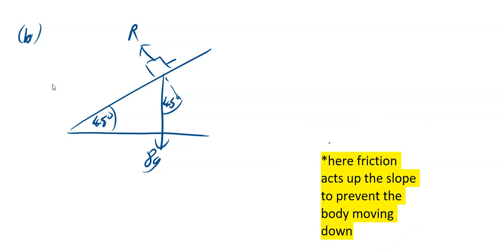You're going to have your 15 going this way, and as well, your X is going to be acting up the slope to prevent it going down. To prevent the body moving down, X is up the slope.